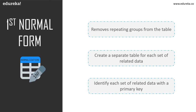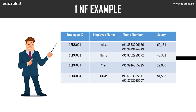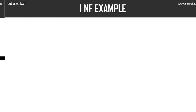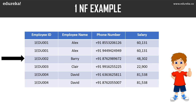The following functions are performed in first normal form: it removes repeating groups from the table, creates a separate table for each set of related data, and identifies each set of related data with a primary key. In the employee table, we have employee ID, employee name, phone number, and salary as columns. The phone number column has two values, which violates first normal form. After applying 1NF, each row is distinct with no cell holding multiple values — atomicity is achieved.